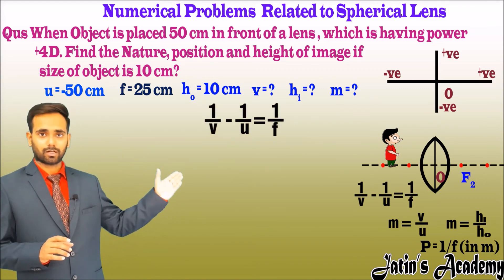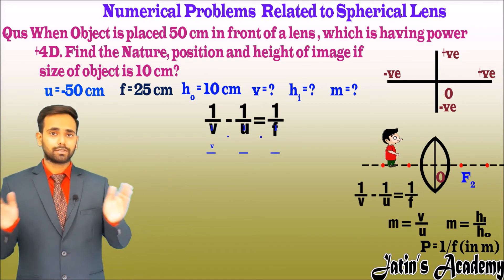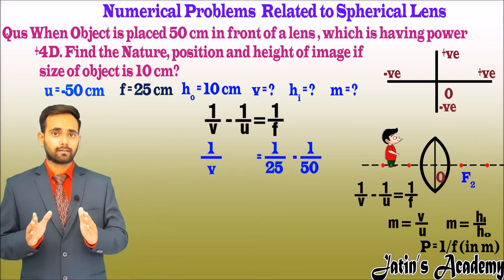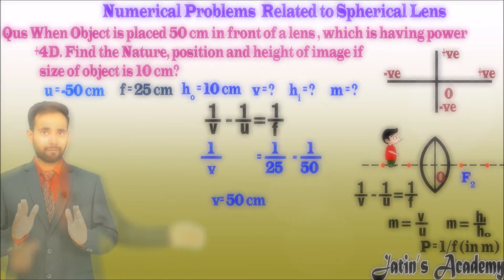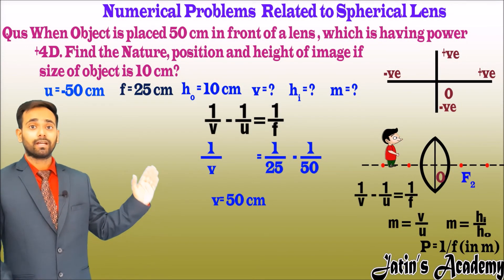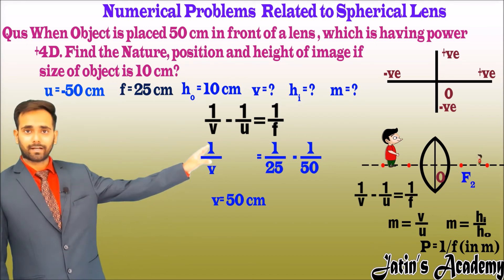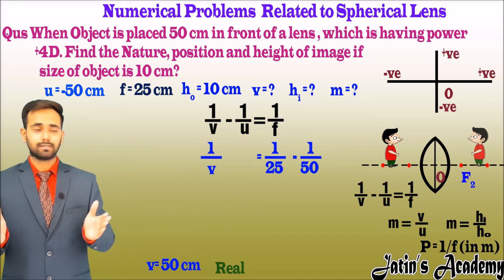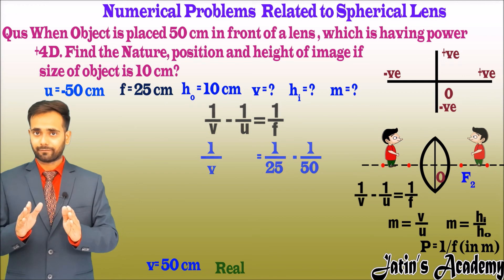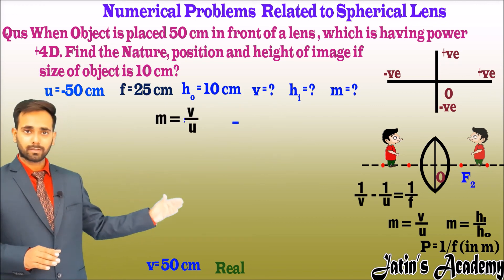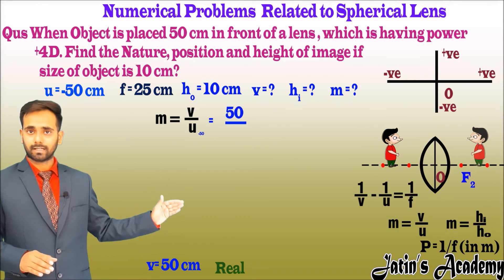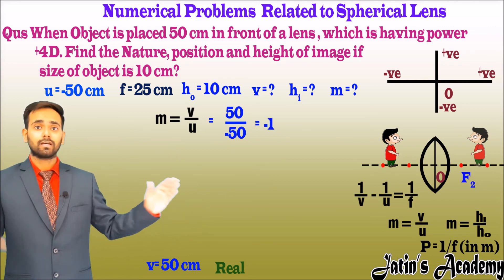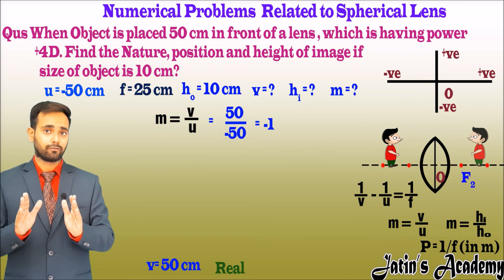Using the lens formula: 1/v − 1/u = 1/f. Substituting the values of f and u, after solving we get v = +50 cm. Since v is positive, the image is formed on the right side of the lens, which means the image is real. Now calculating magnification: m = v/u = (+50)/(−50) = −1.